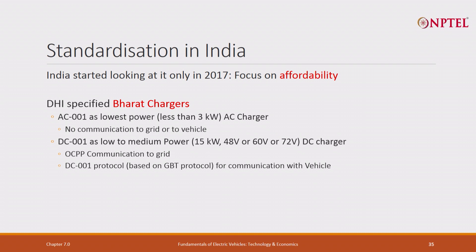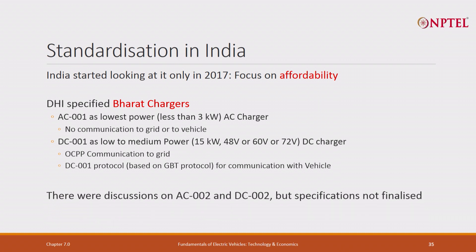This should have been adopted and used. It has been adopted, but politics goes on. Then there is a DC 001 charger — the first DC charger — specified at 48 volt for small two-wheelers and three-wheelers, using 15 kilowatt, which is a lot for small vehicles. It could also be done at 60 volts or 72 volts DC. It uses OCPP communication to the grid, and it uses DC 001 based on the GB/T protocol that China used for communication with the vehicle, with some modifications. We thought we could standardize this and win the market, but unfortunately governments and industry do not fully agree.